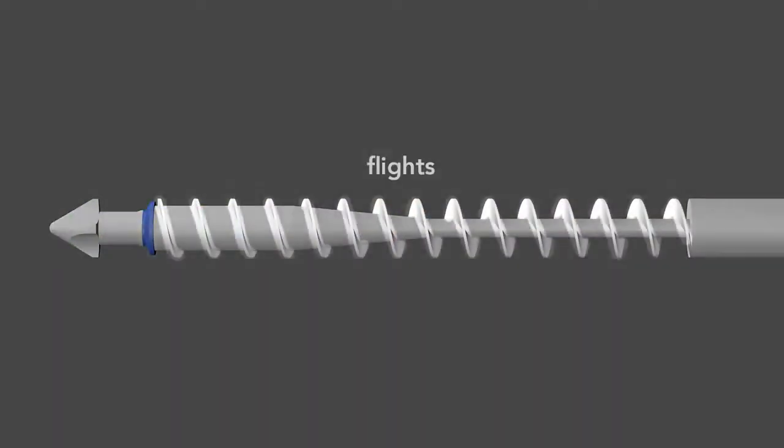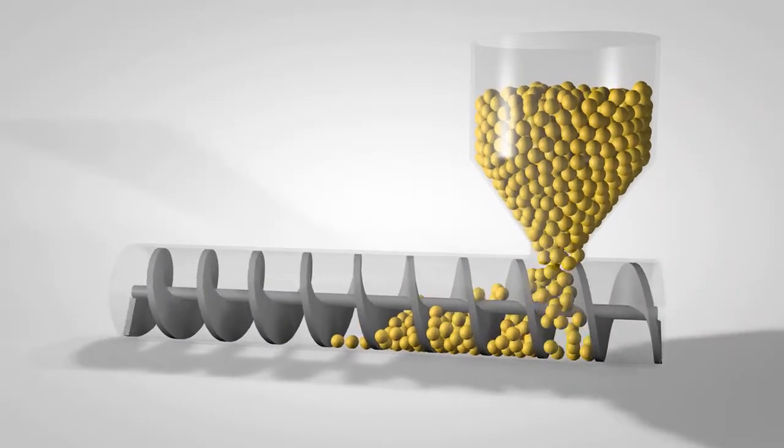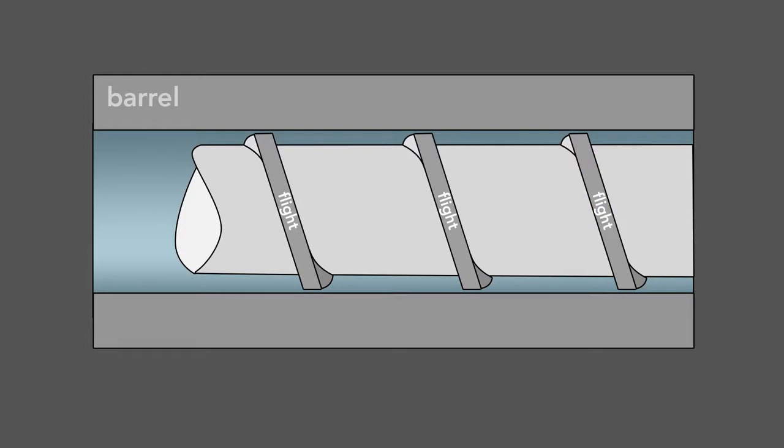Second, the screw has flights that wrap around the shaft. As the screw rotates, the flights transport the raw material forward through the barrel. The flights also serve to mix the plastic. The screw action agitates the melting pellets within the flights to create a uniform mixture.